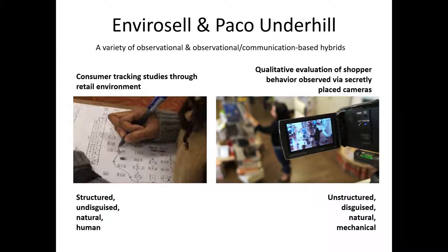Another example from EnviroCell is using qualitative evaluation of shopper behavior observed via secretly placed cameras. EnviroCell would place cameras throughout a retail store in secret locations where individuals are not aware that they're being recorded. Then, hours upon hours of videotape are recorded and watched and documented by EnviroCell employees. In this case, EnviroCell may not be engaging in any structured observation — they may be watching for surprising patterns or unexpected behaviors that weren't a priori specified. Therefore, it might be unstructured observational research. It's definitely occurring in a disguised space, still in a natural setting, but this time relying on mechanical observation to document the data.